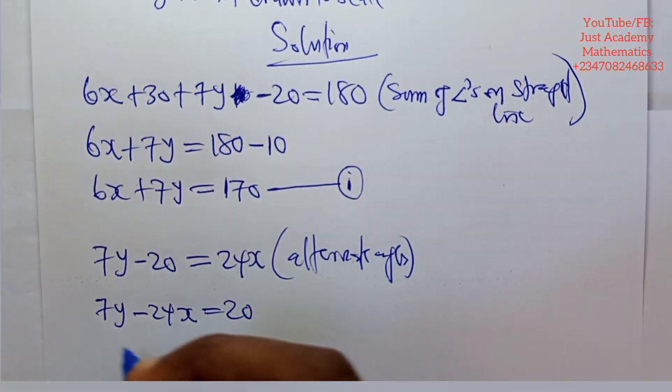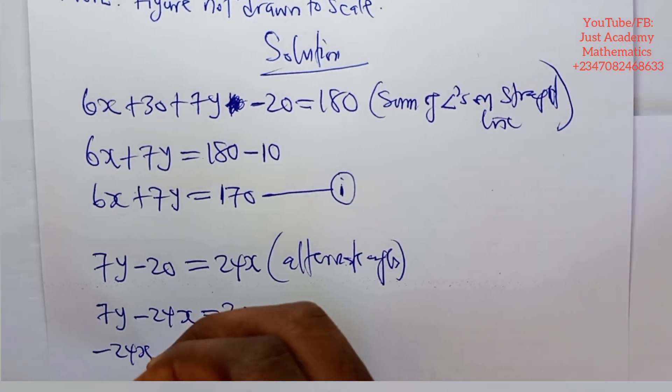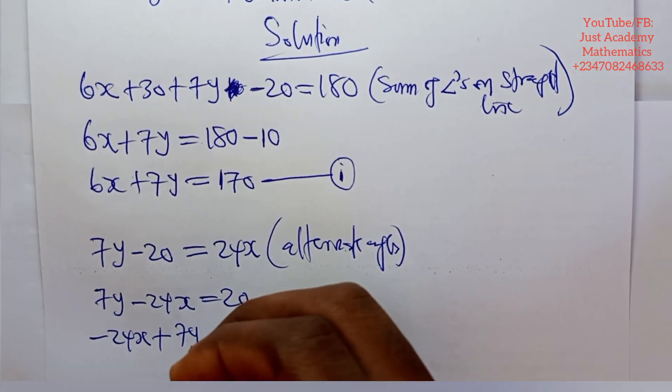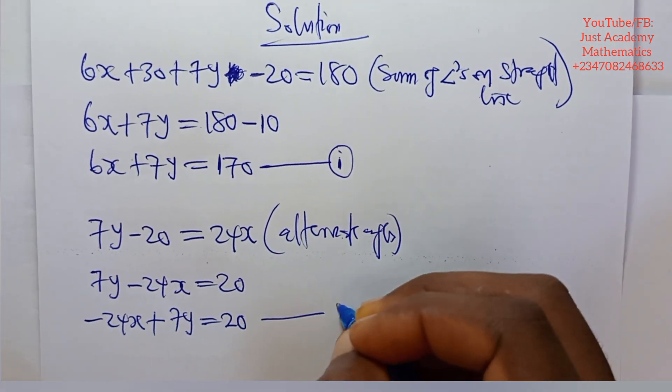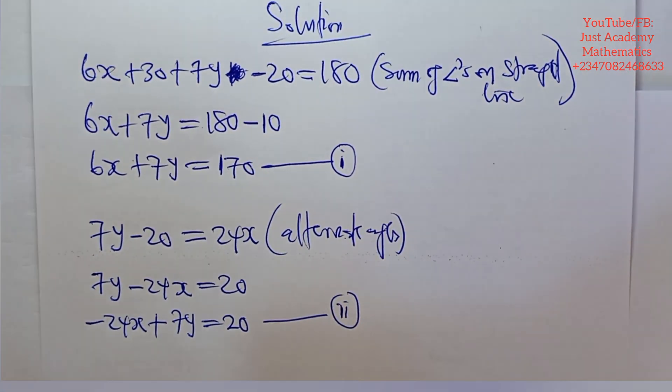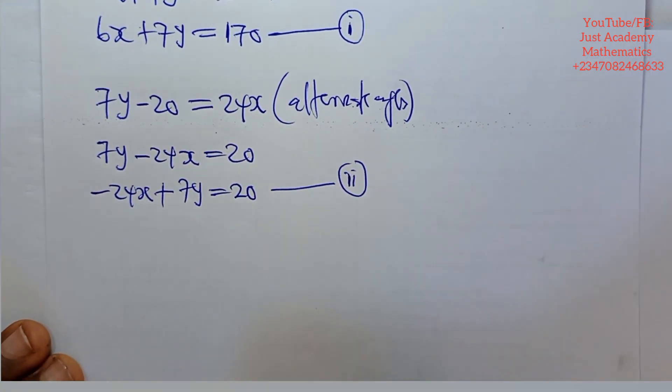Now, let's start with x. So I have minus 24x plus 7y is equals to 20. Let's call this equation 2. So let's go and find the value of x and y using equation 1 and equation 2.